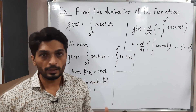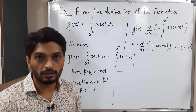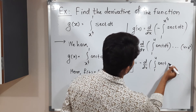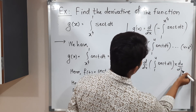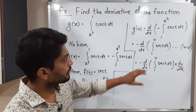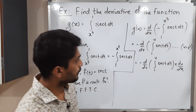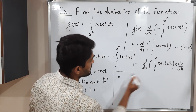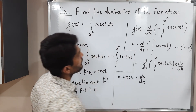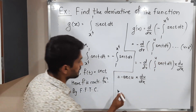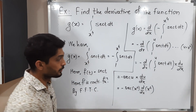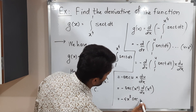The upper limit is u and we are differentiating with respect to x, so we use the chain rule. By the chain rule: minus the derivative with respect to u of the integration from 1 to u of sec t dt, times du/dx. The du's cancel and we have d/dx. We apply the First Fundamental Theorem of Calculus: replace t by u to get minus sec u times du/dx. The value of u is x⁴, so substituting: minus sec(x⁴) times the derivative of x⁴. The derivative of x⁴ is 4x³. Therefore the answer is minus 4x³ sec(x⁴). This is the required answer.